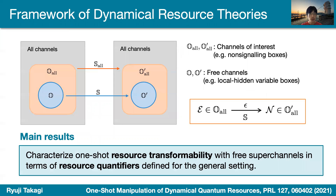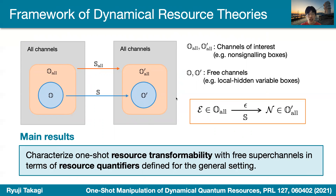This is what we do in this work. We introduced a general framework for a given set of channels. We can now set up a set of channels of interest, such as the non-signaling boxes in the theory. Then we can consider channel transmissions from this to another set of channels of interest, which might have different structures and another set of free channels. Then we can set the set of free super channels that map the set of free channels to another set of free channels. With this, we can now ask: for given channels E and N, does there exist a free super channel that maps channel E to channel N within some error?